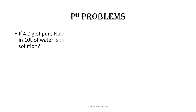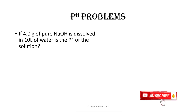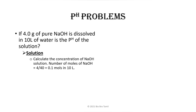Example four: If 4 grams of pure sodium hydroxide is dissolved in 10 liters of water, what is the pH of the solution? The molar mass of NaOH is approximately 40 g/mol, so 4 g divided by 40 equals 0.1 moles in 10 liters of water.